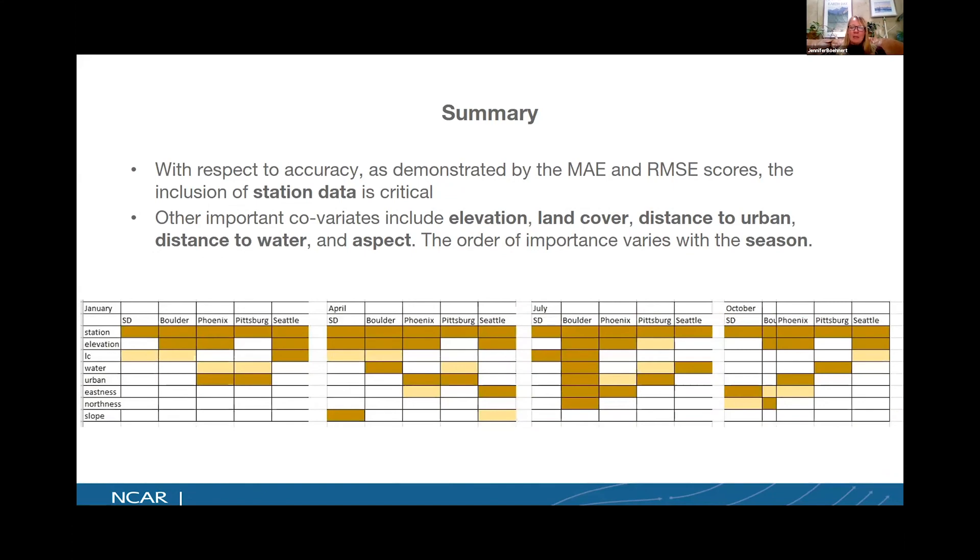So in summary, by taking a look at our analysis over our different domains and our different error scores, we found that the inclusion of that station data was critical for mean temperature downscaling. Also, other covariates were also really important, but it depended on the location and the seasonality. Elevation, land cover, distance to urban, distance to water, and aspect are all important covariates. Keep in mind, you have to think about where are you doing this and what is the seasonality that you're trying to downscale in order to figure out what would be the best ones that would add information to your downscaling technique. The chart below shows you the different seasons that we have and the different domains. And in brown are the best models, are the best covariates that we added to the models. And the peach areas are the second best that we added to the model. So you can really see stations was critical throughout all and elevation was another key covariate to add.